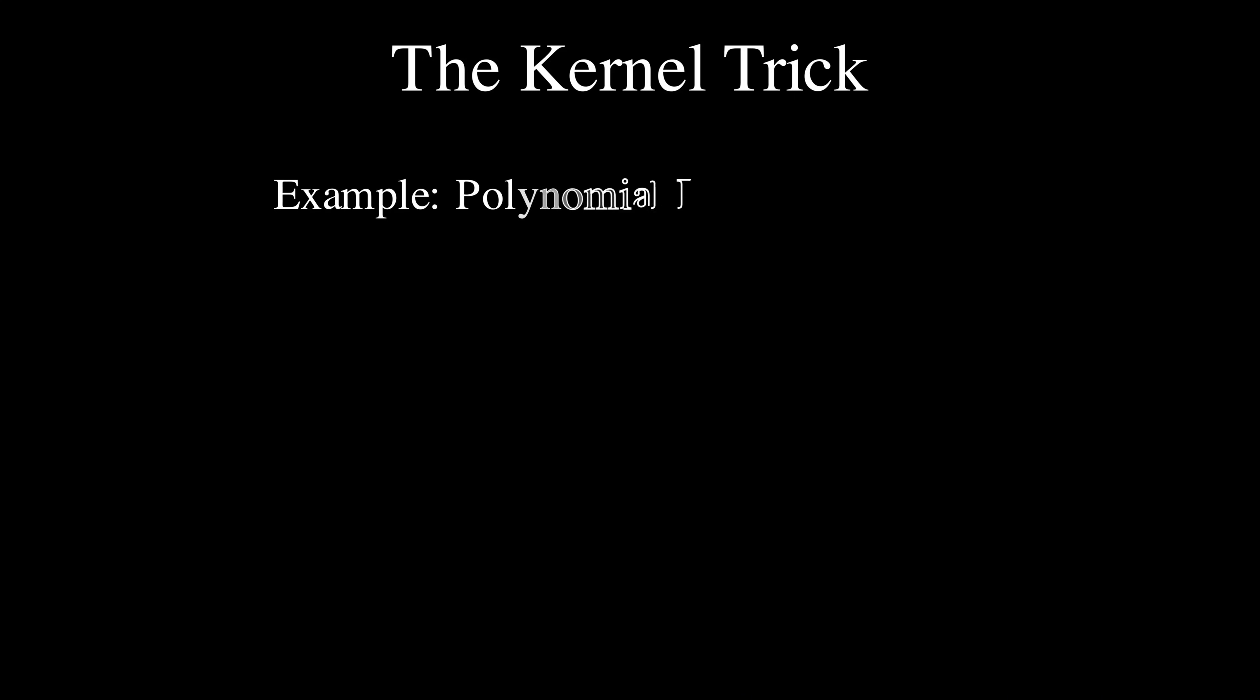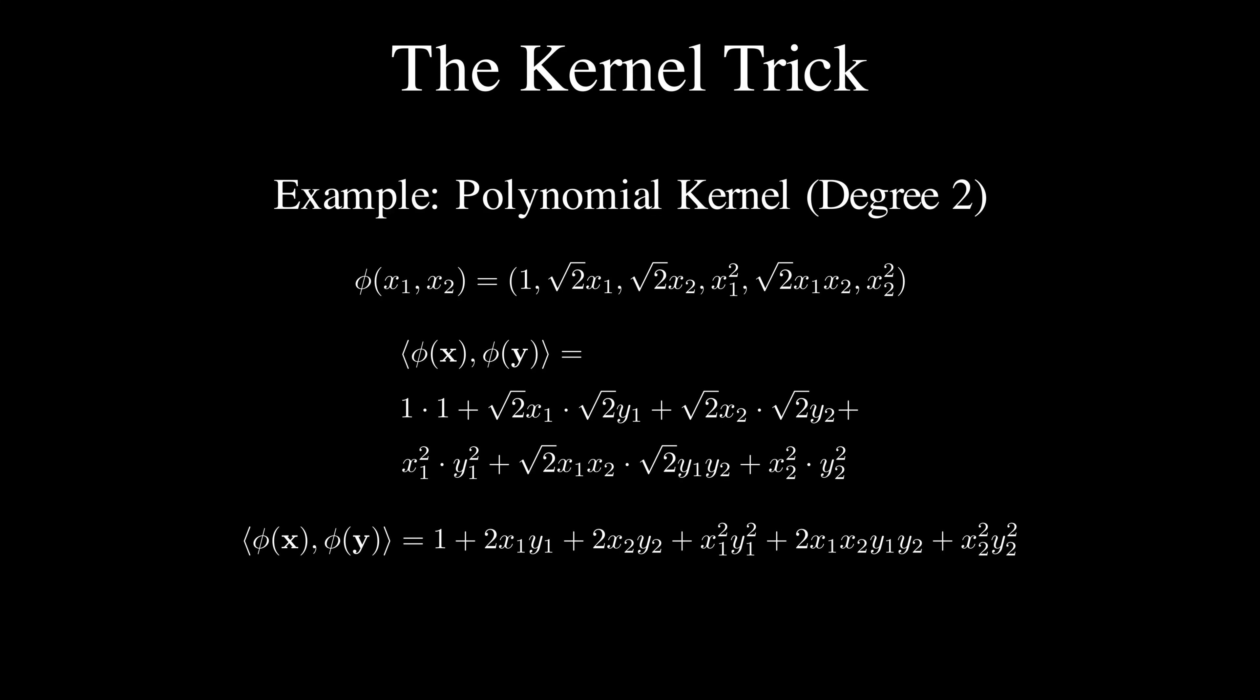Let me show you an example with the polynomial kernel of degree 2. If we fully expand our transformed feature vector and compute the dot product, we get a big messy expression. But after simplifying, we realize it can be written as simply (1 + xᵀy)². This means that instead of transforming our data to 6 dimensions and then computing the dot products, we can just use our original data and apply this much simpler kernel function.